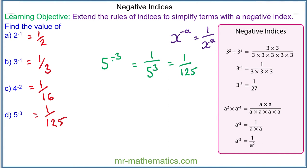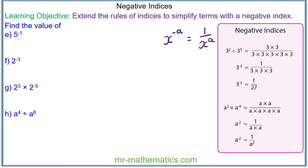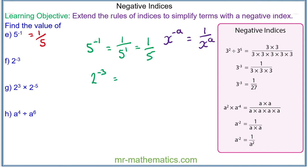Let's try some more questions. You want to try and simplify each of these expressions yourself by pausing the video, and you can resume it when you're ready. For question e we have 5 to the power of negative 1. The negative means this is 1 over 5 to the 1, and 5 to the power of 1 is 5, so it simplifies to make 1 fifth. Question f: we have 2 to the power of negative 3. The negative means this is 1 over 2 cubed. 2 to the power of 3 is 8, so it simplifies to make 1 eighth.